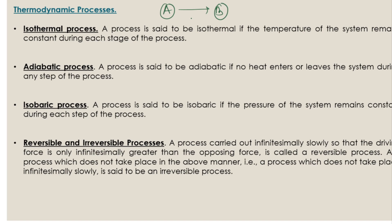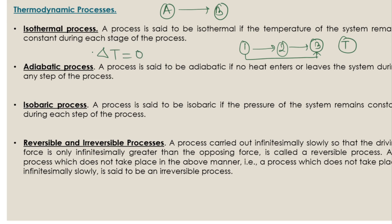In an isothermal process, when we change a system from one state to another state, the temperature remains fixed or constant throughout the whole process. Such processes are known as isothermal processes. In an isothermal process, there is no change in temperature, so delta T equals zero.